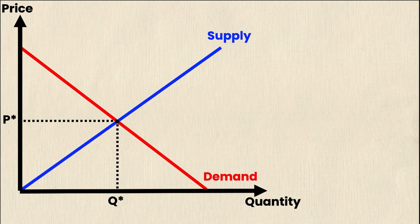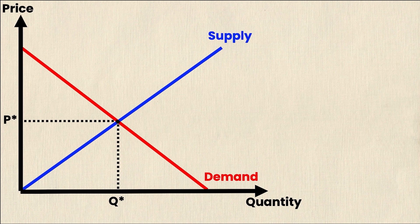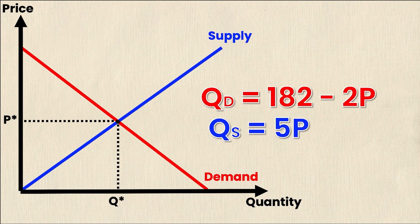Now the first step to calculating producer surplus is actually to get those equilibrium values. So on this graph you can see that they're denoted as p-star and q-star. In order to find those values I need the demand equation and the supply equation that's represented by these lines and this will be given to you by your prof or by your teacher in order for you to solve.